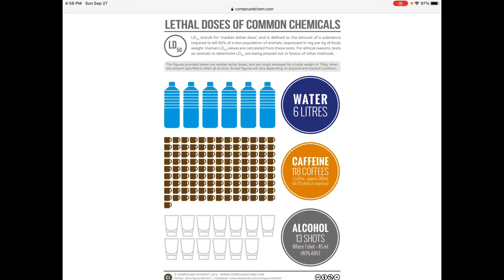118 coffees will give you enough caffeine to kill 50% of the population. Notice that if we look at the caffeine, that's 240 milliliters per coffee. If you add 118 coffees at 240 milliliters, that's actually more water than you can drink. So you're actually more likely to die of water overdose than caffeine overdose. Alcohol — roughly 13 shots, basically just like a regular tequila shot. So we know that things vary in there.